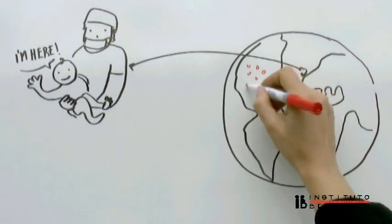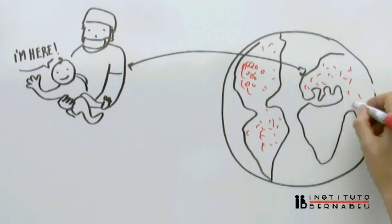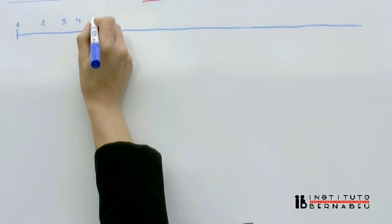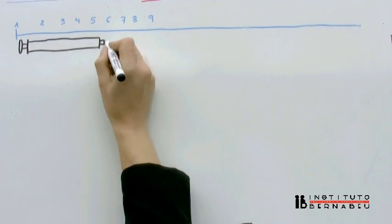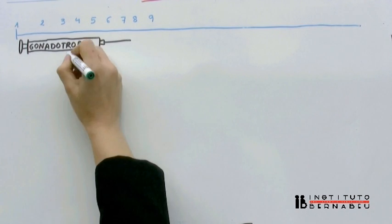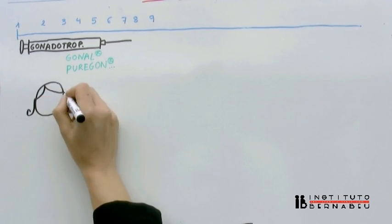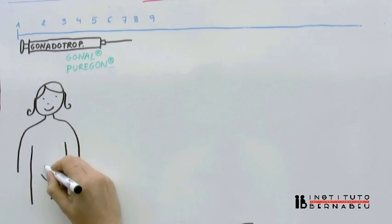We're going to explain in plain language each step of the IVF process. Once medical histories have been studied, ovarian stimulation is the first step. It starts from the onset of menstruation and lasts about 9 days. Its purpose is to obtain an adequate number of good quality oocytes or eggs.